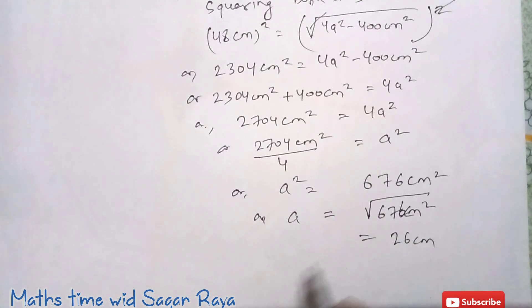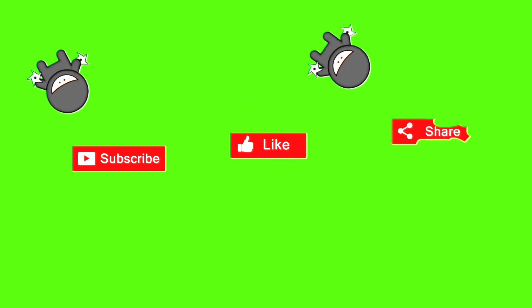And if you just find the square root of 676 cm square, you will get exactly 26 cm. So this is the required answer. Please subscribe, like and share my videos with your friends. See you soon with more educational videos. Thank you.